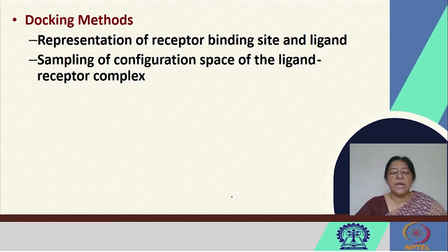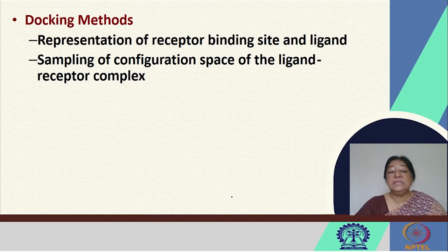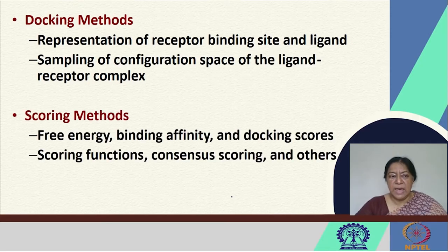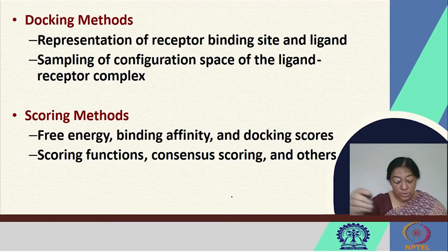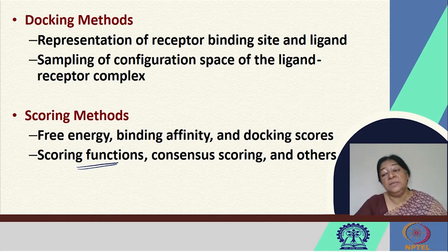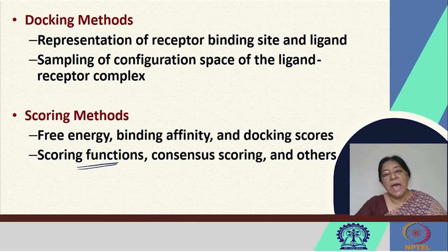The docking methods look at a representation of the receptor binding site and the ligand, then sample the configurational space available. Scoring methods evaluate free energy, binding affinity, and docking scores using specific scoring functions. We can take a substrate or ligand known to have high affinity to a protein, look at the docking score, and then design a molecule with a similar or even better scoring function.